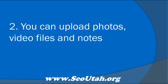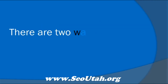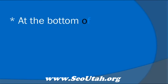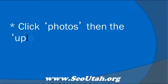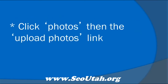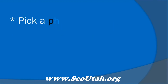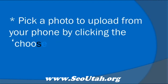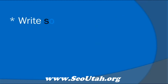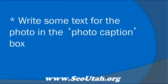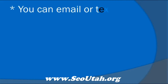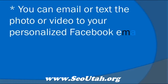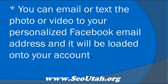You can upload photos, video files, and notes. There are two ways to do this. At the bottom of your homepage, look for the bookmarks link, click Photos, then the Upload Photos link. Pick a photo to upload from your phone by clicking the Choose File button. Write some text for the photo in the photo caption box and click Upload. Or, you can email or text the photo or video to your personalized Facebook email address and it will be uploaded onto your account.